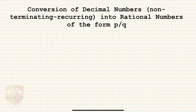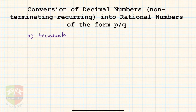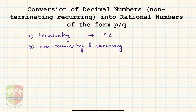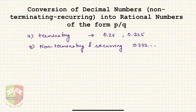In the earlier sessions we saw that there are two types of decimal representation. One is terminating decimal representation and the other one is non-terminating and repeating, or recurring, decimal representation. Terminating examples were 0.25, 0.325 and things like that. Non-terminating would be 0.333 continuing, or 0.313131 like that.